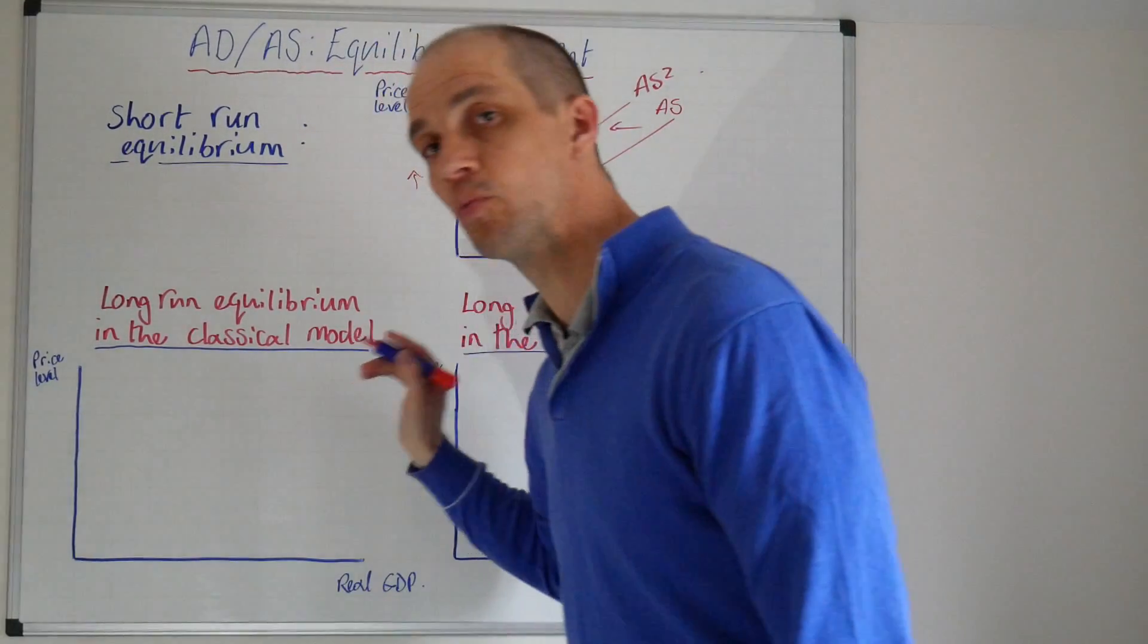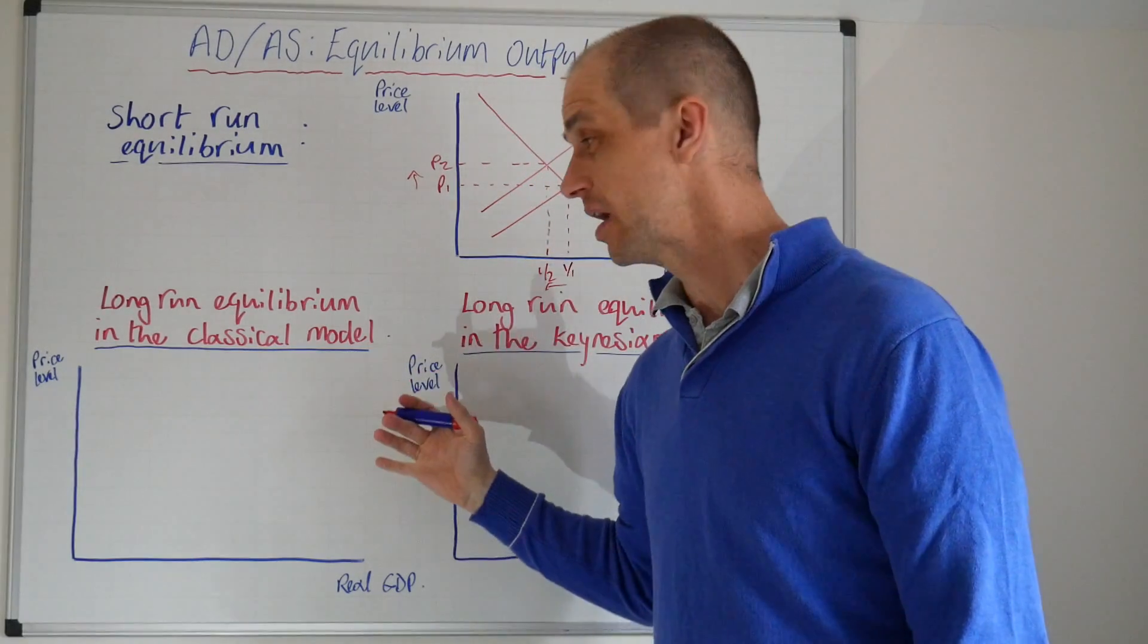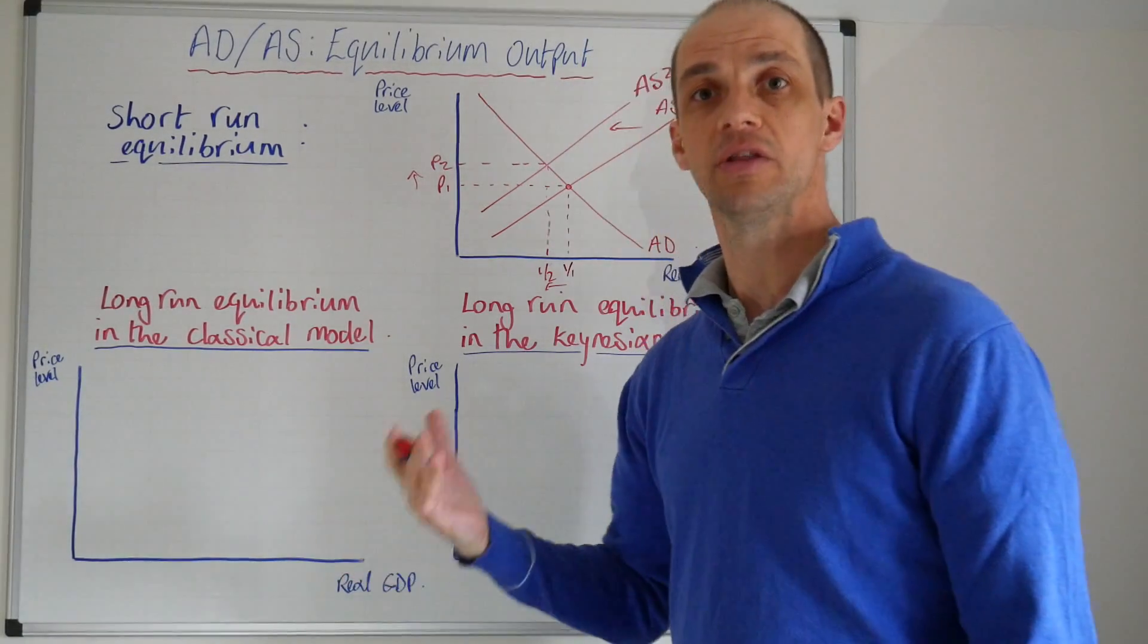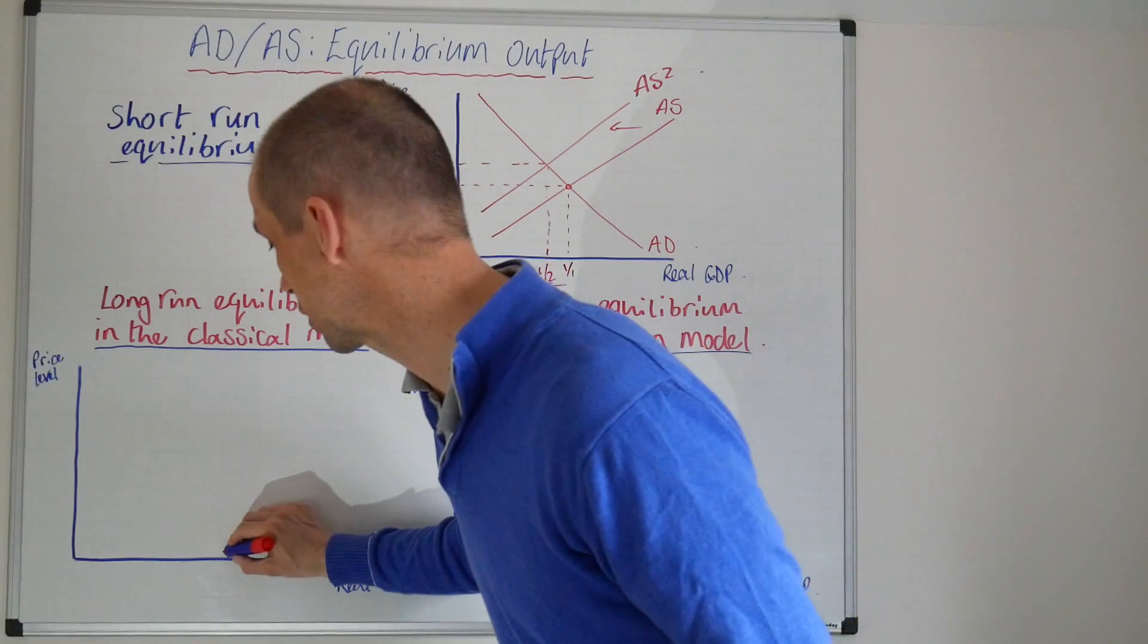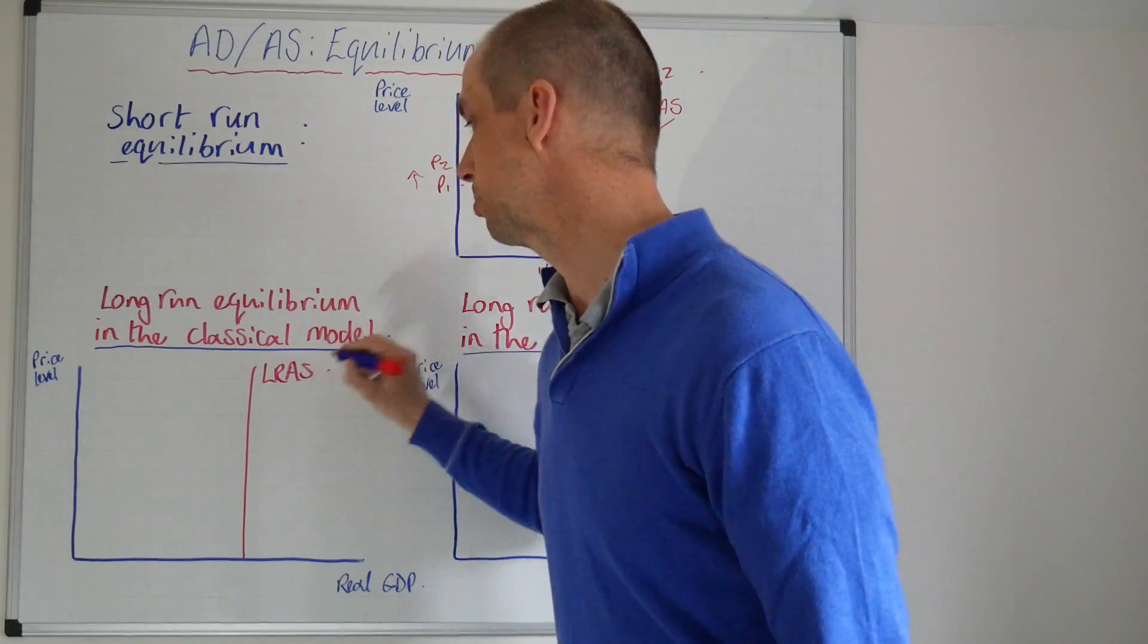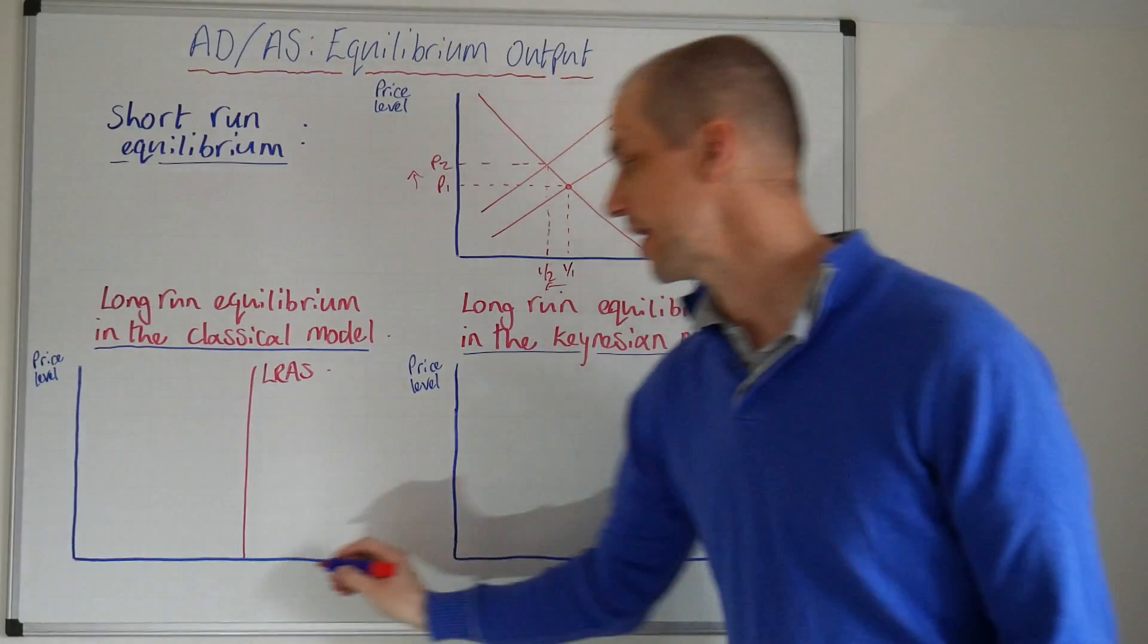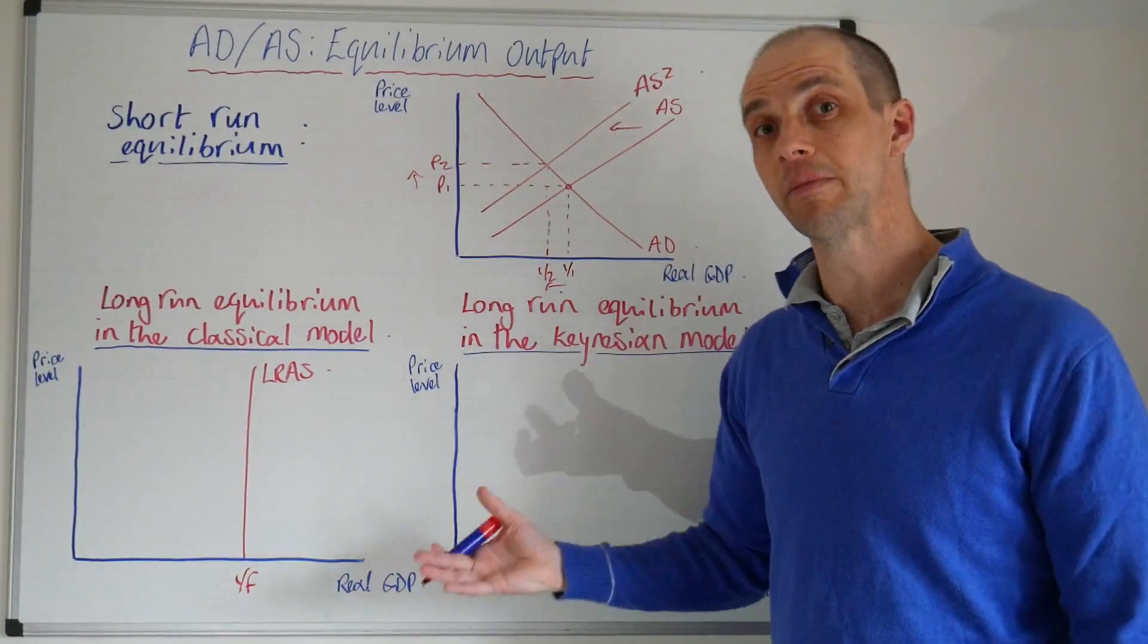Now remember what we looked at last time really focused on the fact that the classical school of economics believes that in the long run the economy will reach a position of full employment. So let's just depict that here by our LRAS curve. So we've got a perfectly inelastic LRAS curve there and that highlights YF, our position of full employment.